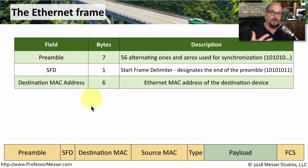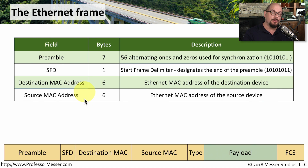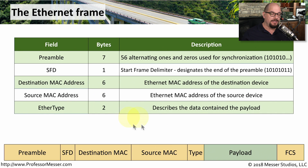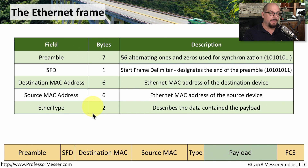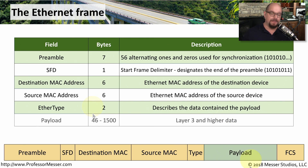The next two pieces of information are the destination — where this frame is going — and the source address, which details who sent this information across the network. The type field, also called the ether type, describes what's inside of this particular frame. This ether type field might indicate IP version 4 or IP version 6 traffic. Then finally is the payload, which might contain IP information, TCP data, and browsing information — all contained within the payload of the ethernet frame.